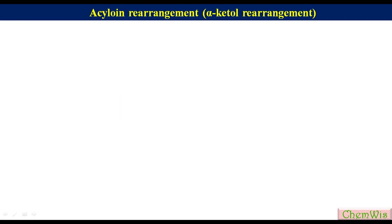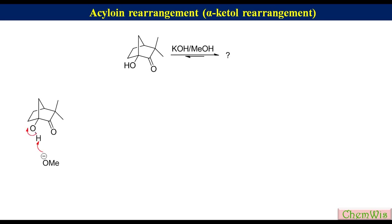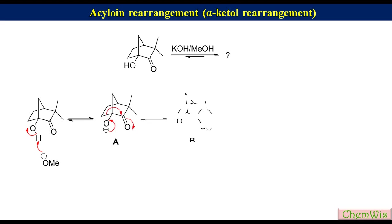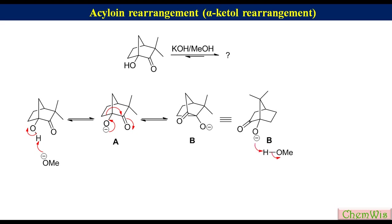Bridged acyloins also undergo this type of rearrangement, often stereospecifically. Methoxide ion abstracts the proton from the alcoholic group to produce alkoxide ion A, which undergoes a 1,2-shift to produce rearranged alkoxide ion B. This alkoxide ion B can also be written in an alternative form. Alkoxide B, after taking a proton from the solvent, produces the product.